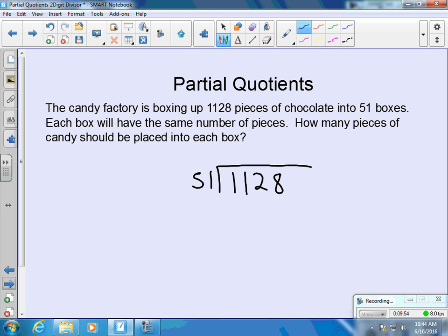So again, we go over and we think of our divisor in groups. One group of 51 would be 51. 10 groups of 51 would be 510. 2 groups of 51 would be 102.